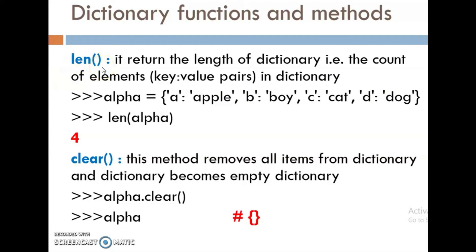It will return the length of the dictionary, that is the count of elements. How many elements are there? 1, 2, 3, 4 — 4 elements. len(alpha) — we will get the answer as 4.